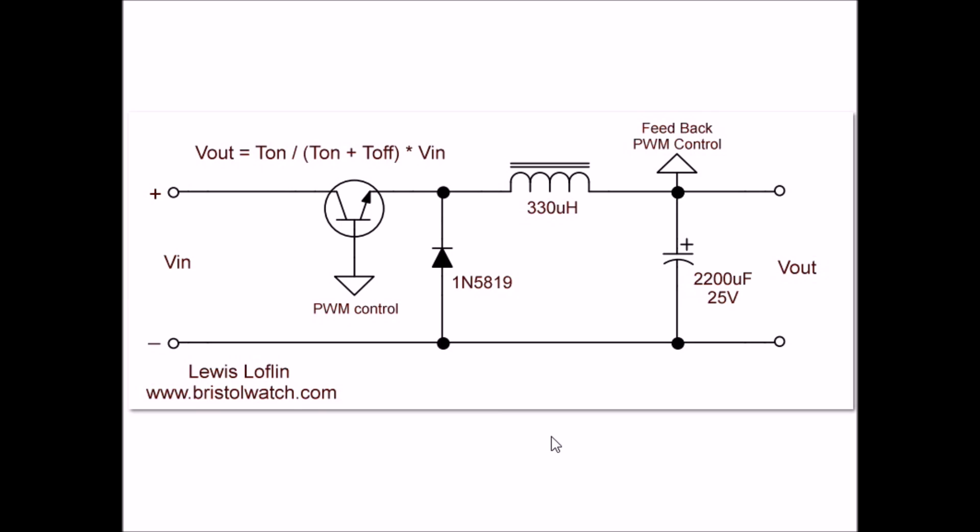This illustrates our basic buck switching regulator circuit. This always produces a voltage less than the input voltage. This consists of a bipolar or MOSFET transistor switch, a catch diode, and a circuit using an inductor capacitor setup that operates partly as a filter and partly as sort of a tank circuit. It stores energy. By controlling the duty cycle that switches on and off my switching transistor, I pump energy into this circuit. And the output voltage is based on the duty cycle, which is T on divided by T on plus T off, times the voltage in.